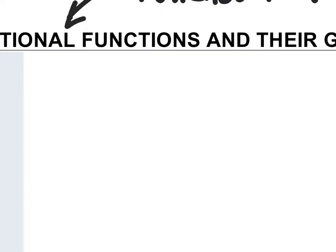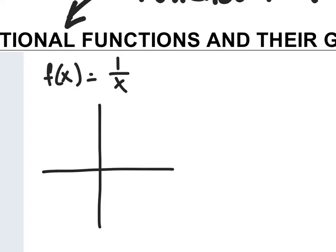Let's think of an example. Let me graph f of x equals one over x — this is your simplest rational function. The graph looks like this: here's your y-axis, here's your x-axis, and your graph is going to do this — it's going to go like that on one side and like this on the other side. The y-axis is a vertical asymptote.